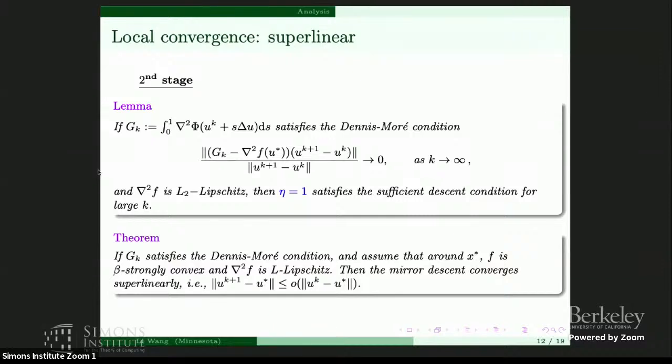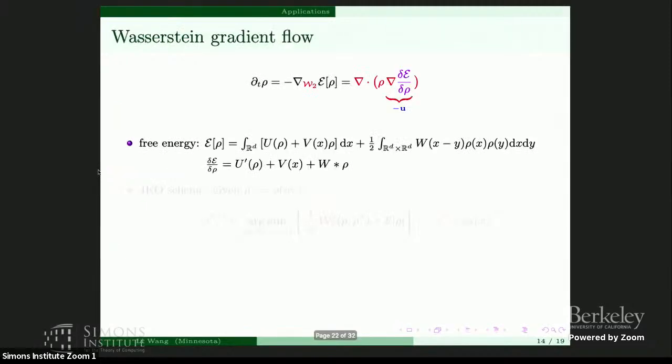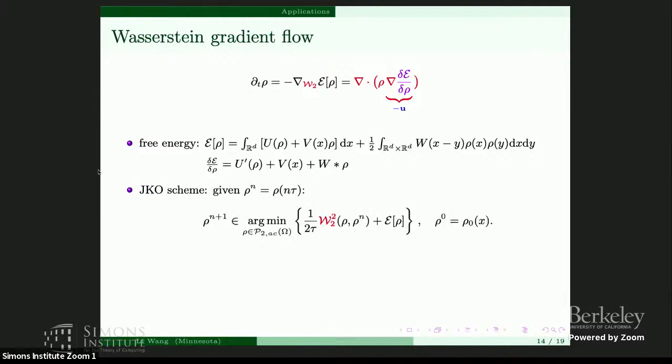Now we apply this method to gradient flow. The first example is the Wasserstein gradient flow. Rho is the probability density, and the time derivative of rho follows the steepest descent of the energy with respect to the Wasserstein-2 metric. The energy takes a general form: V(x) is the potential energy, and W is the interaction kernel. There is a huge literature on computing this Wasserstein gradient flow, but I'll explain our approach: a variational approach, or what we call the JKO scheme.